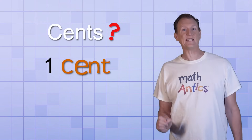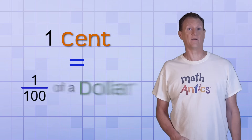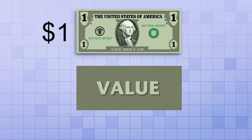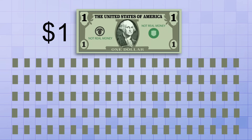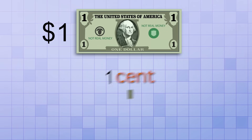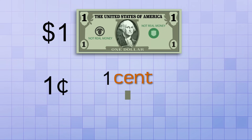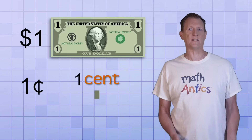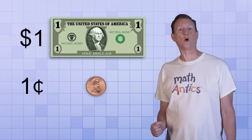A cent, spelled C-E-N-T, is exactly one one-hundredth of a dollar. In other words, it's a fraction of a dollar. If you took the value of a dollar and divided it up into one hundred equal parts, the value of each part would be one cent. And if you have one cent, you write it like this. Notice that the symbol for cents looks like the lowercase c with a vertical line through it. It's similar to the dollar sign, but instead of writing it before a number, it's customary to write the cent sign after a number.